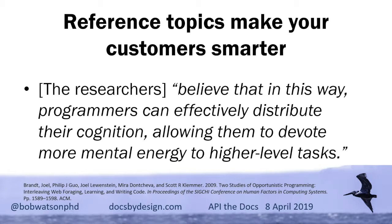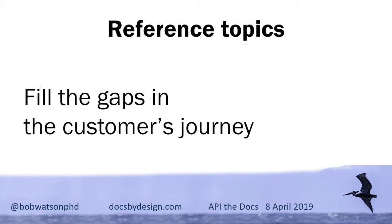The researchers concluded that by having accurate, comprehensive reference topics, developers could essentially distribute that part of their knowledge out to the documentation — they don't have to remember it. That was definitely my case, especially when working across multiple programming languages where the same function has a different name in each one. I'd go back and forth looking at reference topics to find the right function, but I never memorized any of it because I knew it would always be there. As long as I had access to that information, I had other things to think about.